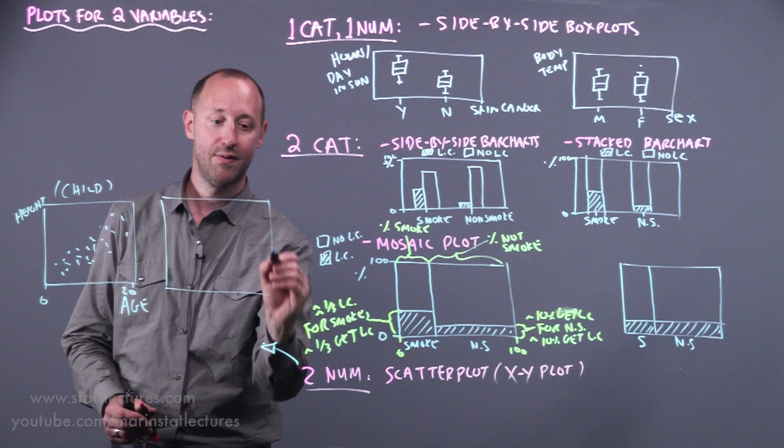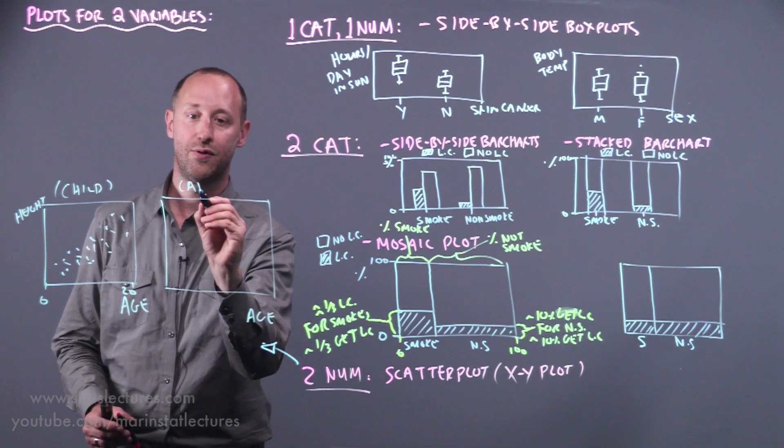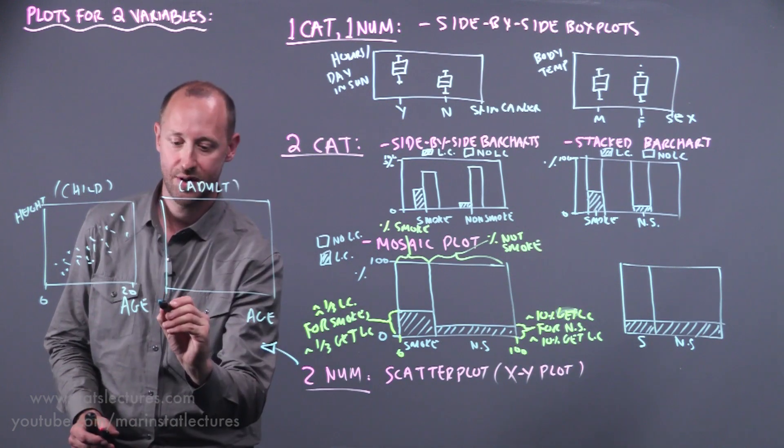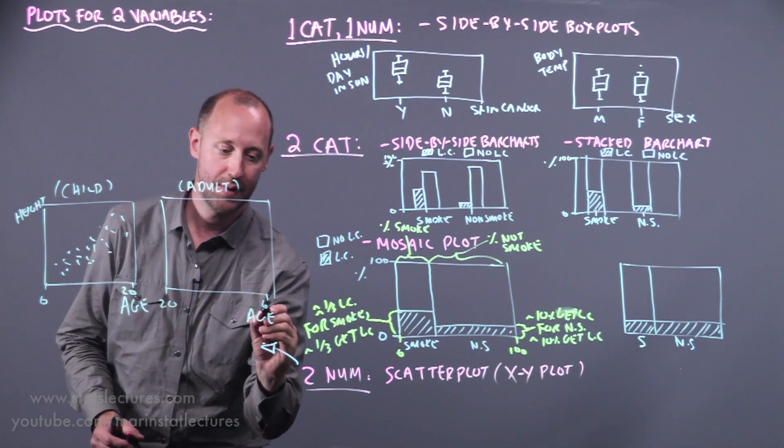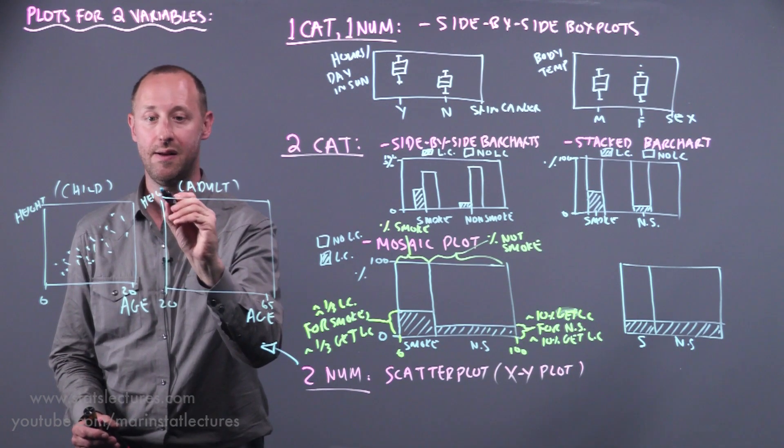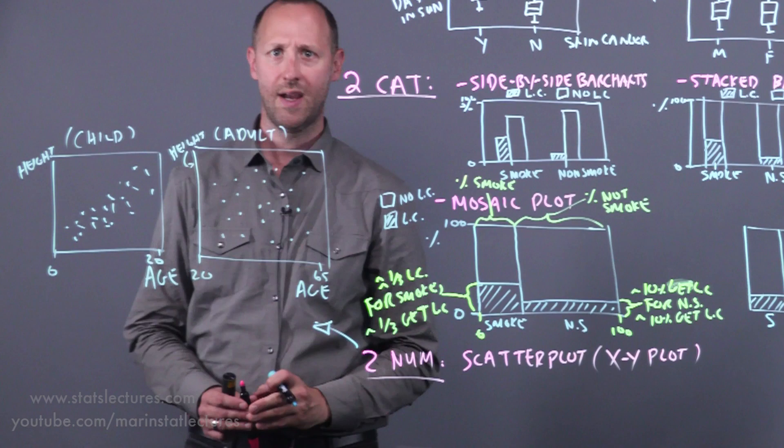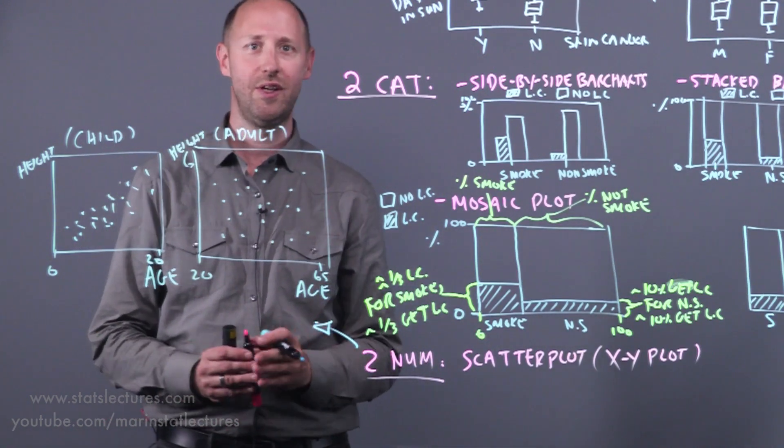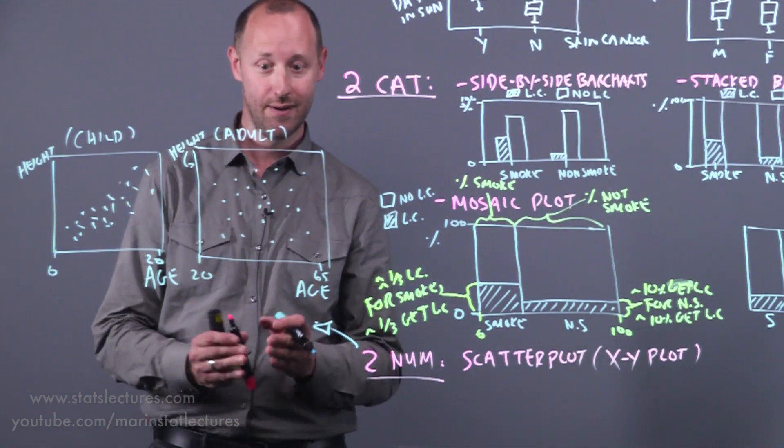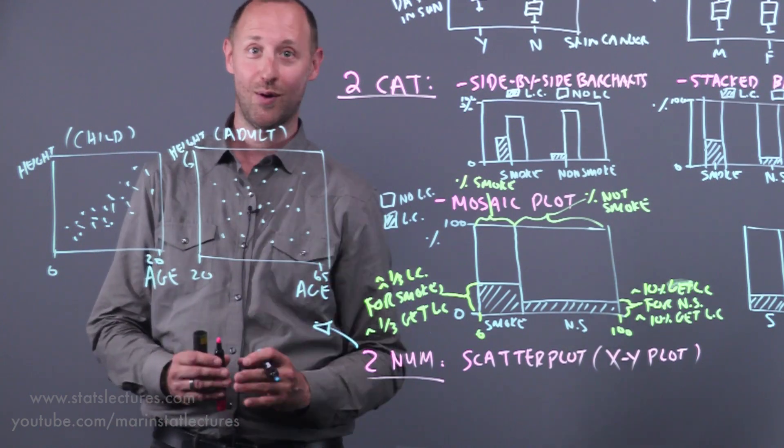What would this plot look like if there was no association? Here's age, and now let's do it for a group of adults. So let's say going from age 20 up to age 65, and again on this axis we're looking at height. We would just see a cloud of points. No real association. That's for a group of adults. There's not really an association between your age and height. Between the ages of 20 and 65 we're done growing, and we're not quite shrinking yet.